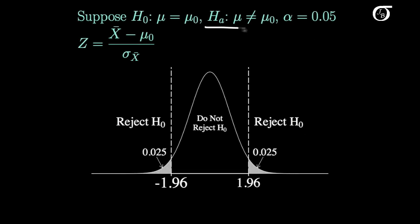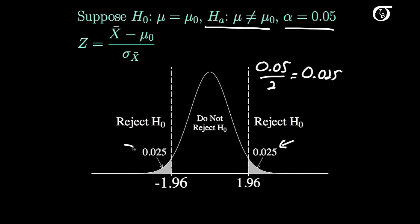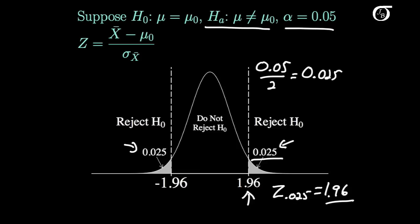For example, with a two-sided alternative and an alpha level of 0.05, we divide 0.05 by 2 to get 0.025, splitting that evenly into the two tails. Using software or a standard normal table, we find the Z-value with an area of 0.025 off to the right. That value is 1.96 — so z.025 equals 1.96. Since the standard normal distribution is symmetric about 0, the value in the left tail is minus 1.96.